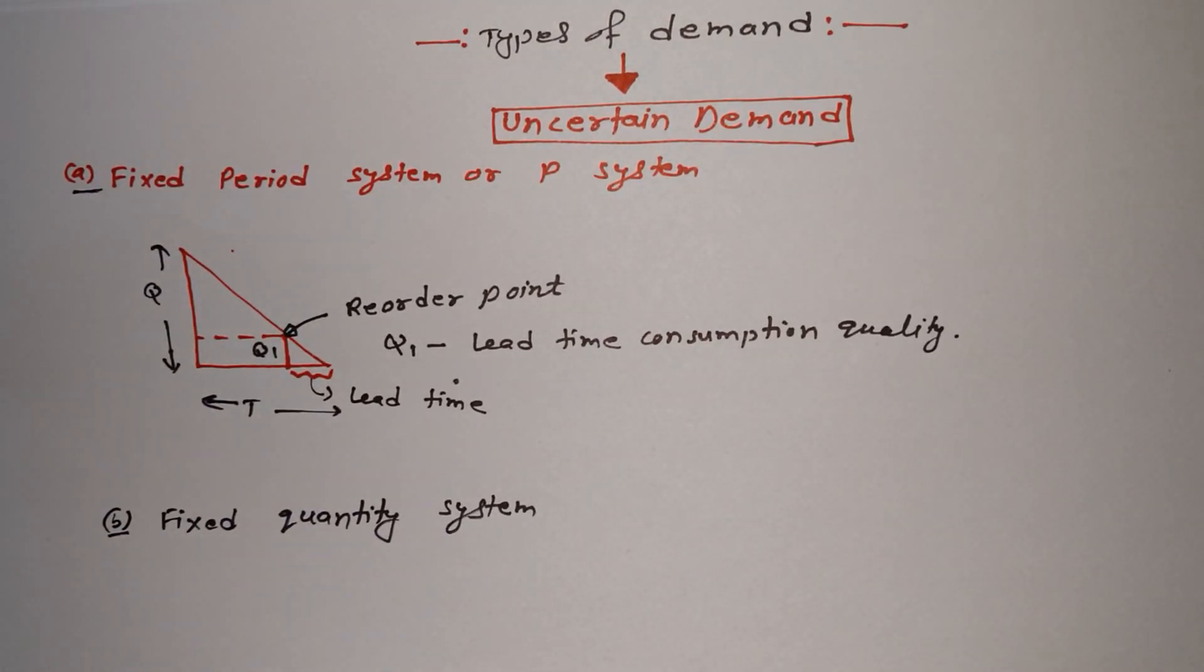Today we are studying about types of demand, and inside the types of demand we are going to study about uncertain demand. Basically there are two types of uncertain demand: first is fixed period system or P system, and next is fixed quantity system. If you go through these two names, you can understand a little bit about it.